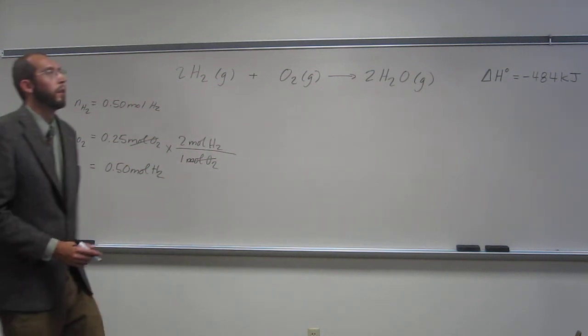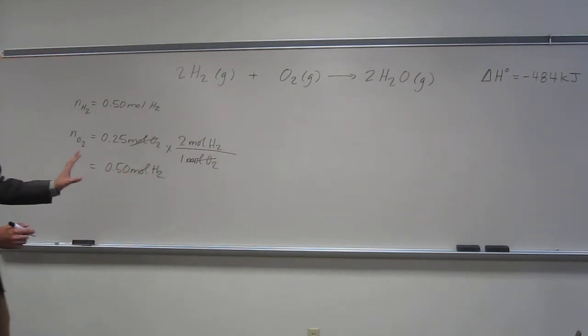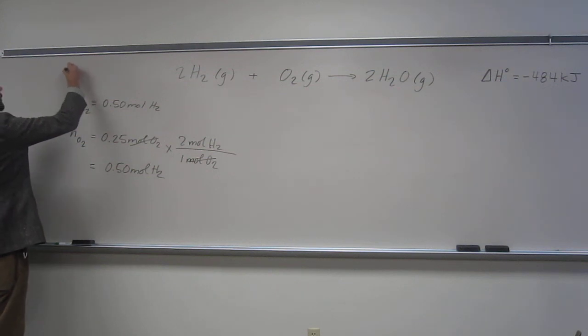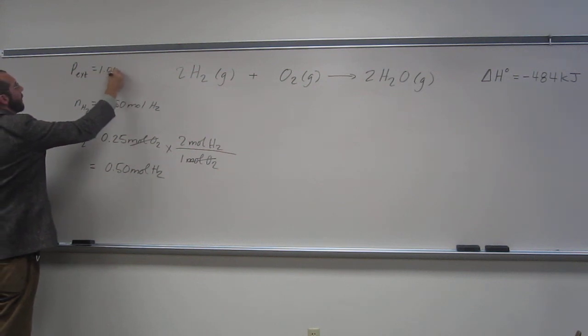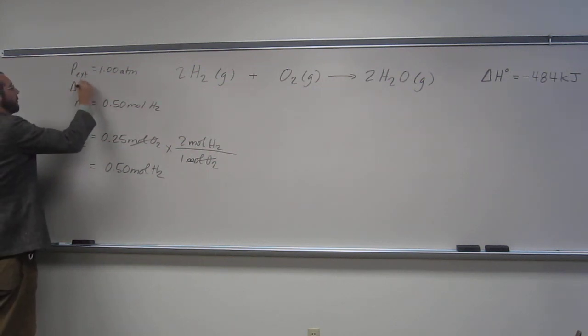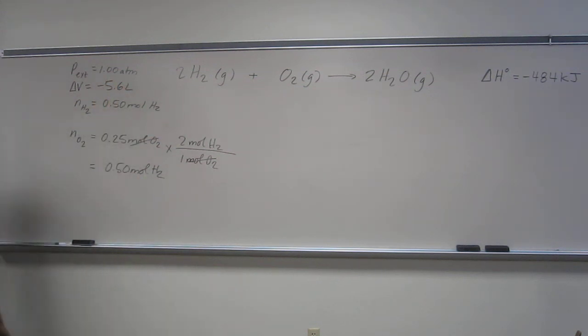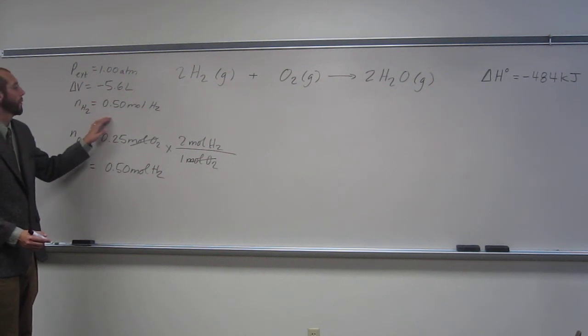So now, it says, what is the atmospheric, so what is the standard atmospheric pressure? So the P external would be 1.0018. And it also gives us the change in volume, which is negative 5.6 liters.